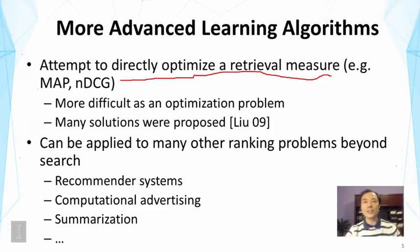In contrast, we might have another case where we predicted the values all around 0.9, and by the objective function the error will be larger. But if we can get the order of the two documents correct, that's actually a better result. So these newer, more advanced approaches will try to correct that problem.